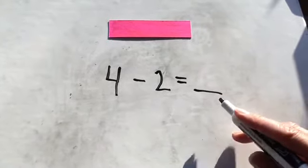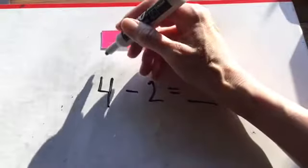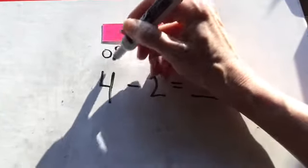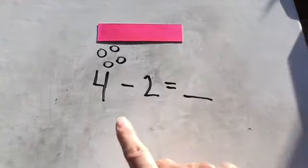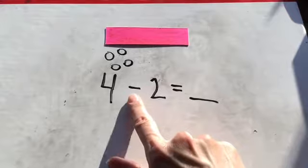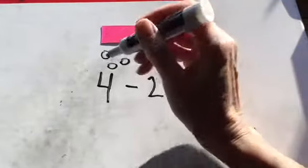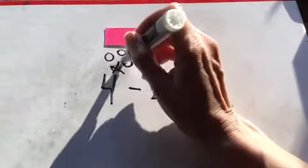I can draw a picture to help me. So we always start out with the bigger number. We have four to begin with. How many are we taking away? Two. This line means we're taking away two. So I'm going to cross out two.